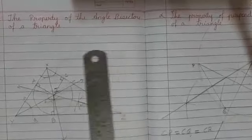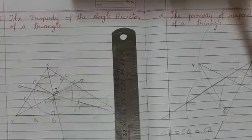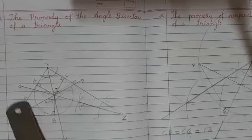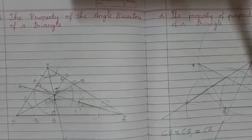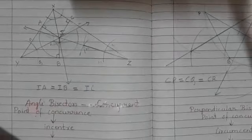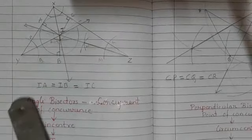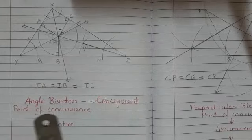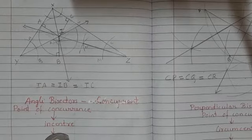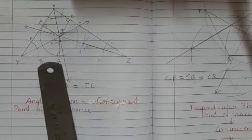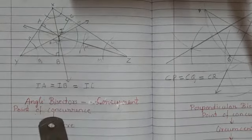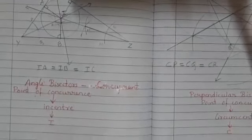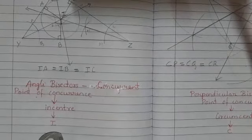Let's recall both properties. What we have learned is that the angle bisectors of a triangle are concurrent to each other. The point of concurrence is called the incenter — because we get a circle inside it. So the point of concurrence is called incenter and it is shown by the letter I.